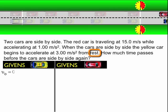So if I look for my unit clues, I know that the yellow car starts from rest, so the initial velocity is going to be zero. I know that it's going to accelerate at 3 meters per second squared, so that's the acceleration.